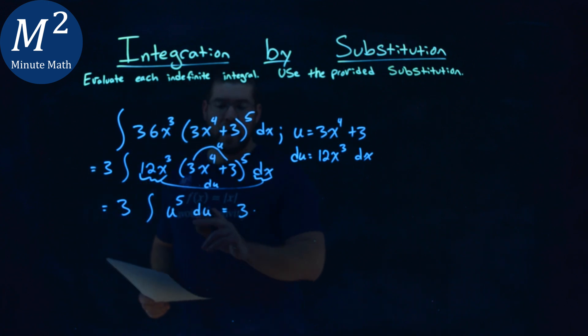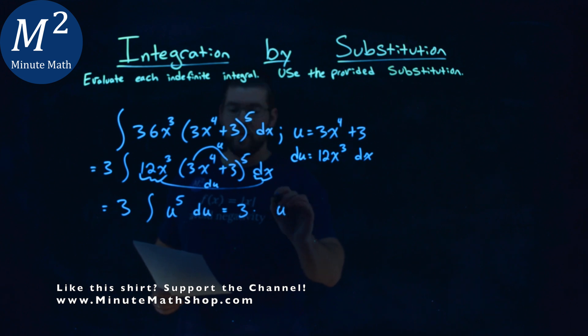3 stays out front. Our power rule says we take u and raise it to a plus 1 power, so we have a 6, and multiply it by a 1/6th out front and plus a c.